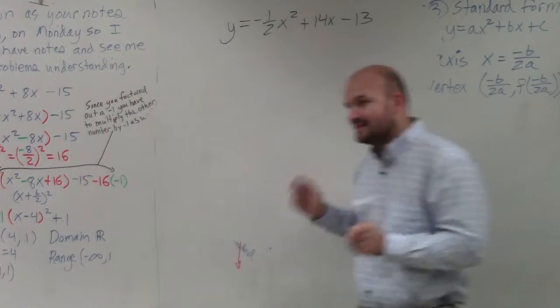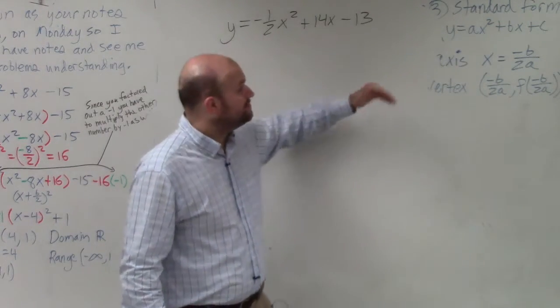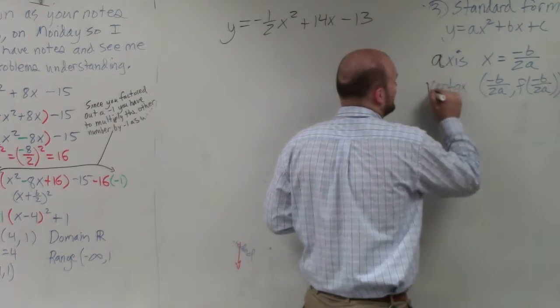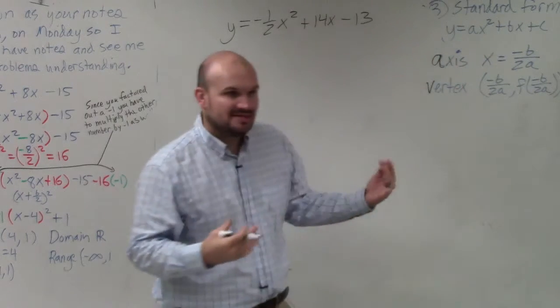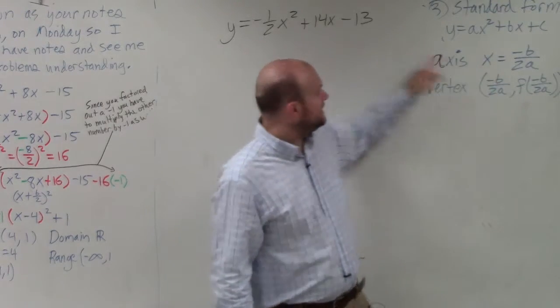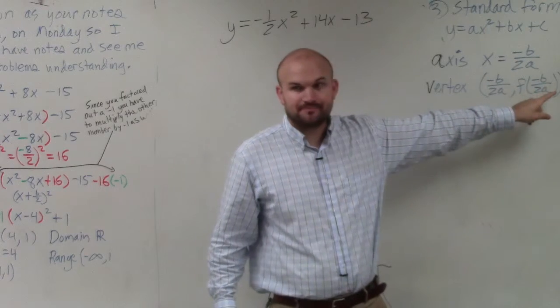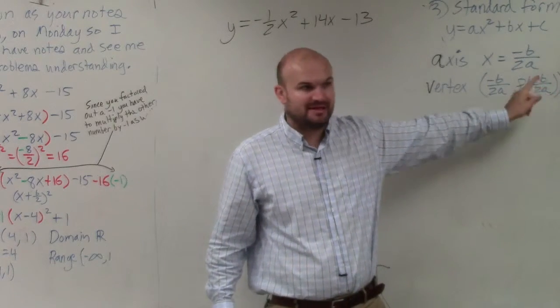However, another method that I want you guys to write down, and I also need you to make sure that you have memorized before you take your test, is this little basic formula. Axis of symmetry is always going to be, in standard form, opposite of b divided by 2a. Always. Opposite of b divided by 2a.